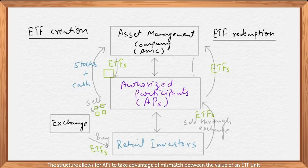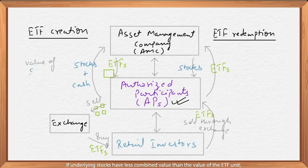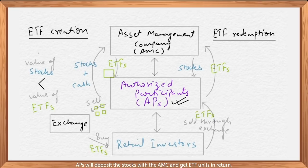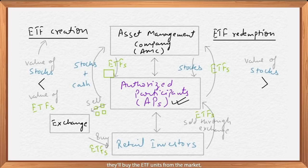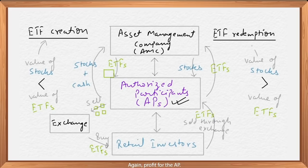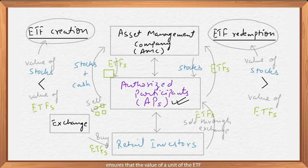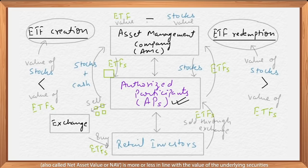This structure allows APs to take advantage of any mismatch between the value of an ETF unit and its underlying stocks. If the underlying stocks have less combined value than the ETF unit, APs will deposit the stocks with the AMC and get ETF units in return, which they'll sell on the exchange for a profit. And if underlying stocks have more value than the ETF unit, they'll buy ETF units from the market and send those units to the AMC to get stocks in return — again, profit for the AP. This buying and selling activity ensures that the value of a unit of the ETF, also called Net Asset Value or NAV, is more or less in line with the value of the underlying securities.